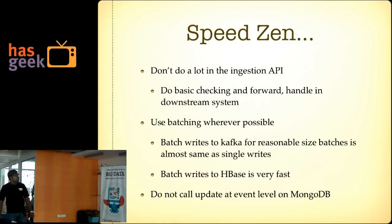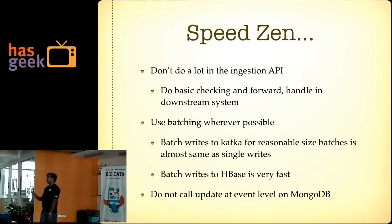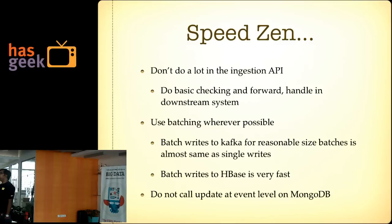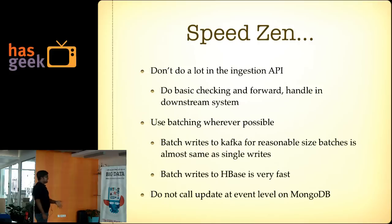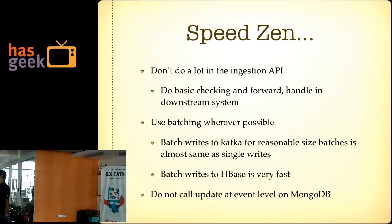Certain things we found while building this: in the ingestion API, basically do not do anything other than the minimal checks needed to keep the system functional — make sure all required header fields are present, and just push. Don't do anything else. Batching is mostly a no-brainer but made a fairly good performance impact. Writing a single event versus a reasonable-size batch to Kafka takes almost the same time — Kafka's protocol supports batching by compressing multiple events into one message, which speeds up writing very fast.